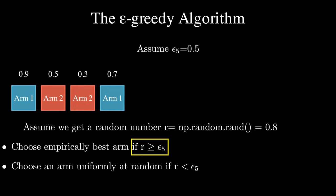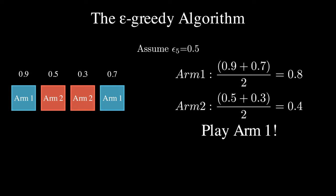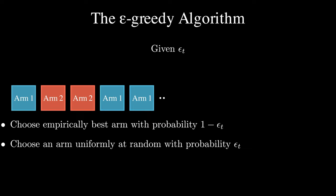The empirical mean estimate for arm 1 is 0.8, and for arm 2 is 0.4. We should play arm 1. And then we just repeat this whole process over and over again.